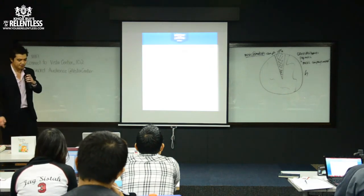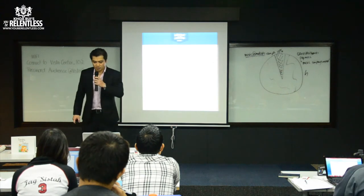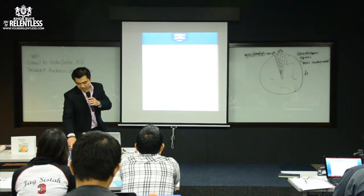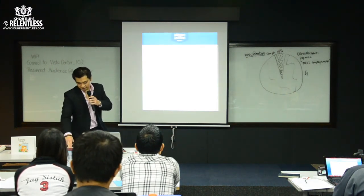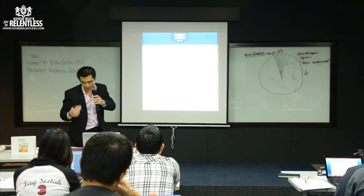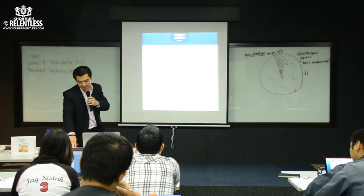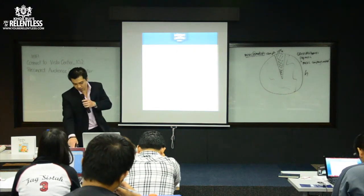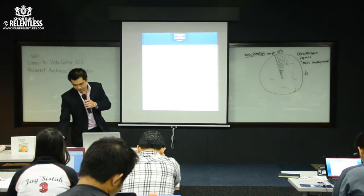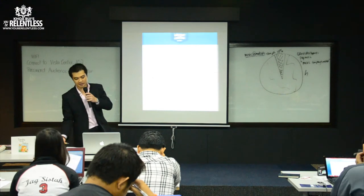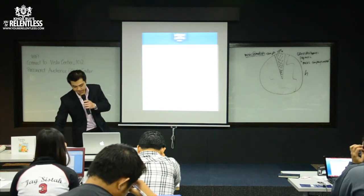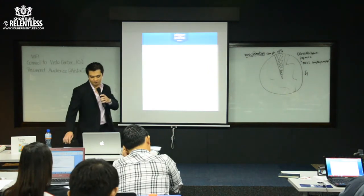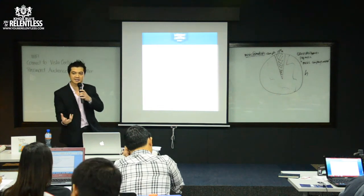The next step: for your passive income project, pick a passive income topic from your list and come up with five domain name ideas for that particular topic. Go to your workbook, question number three, and write down five ideas for your particular domain name. Right now you should have about five different types of domain names — just some ideas to get you started.